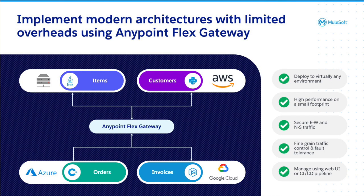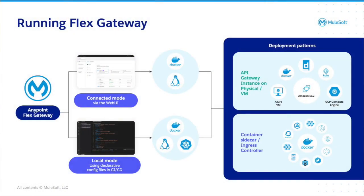So how does this all work? Do customers need to deploy anything? How can they start using the Flex Gateway in their ecosystem today? The installation of Anypoint Flex Gateway can be done in a matter of minutes. In a container orchestration environment, you can install the Flex Gateway as a Docker container running in its own pod, as an ingress controller, or a sidecar container within a Kubernetes cluster. If you want to run Flex Gateway in your virtual machine, you can install it as a Linux service.